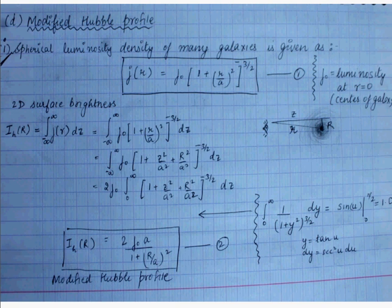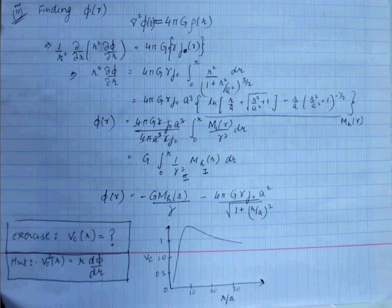In the last lecture, we studied about the modified Hubble profile, whose spherical luminosity density was given by a specific formula. We evaluated the two-dimensional surface brightness using the three-dimensional spherical luminosity density — something very general. If you are given a three-dimensional luminosity for anything, you just need to take the projection along one of the axes to find the two-dimensional surface brightness.